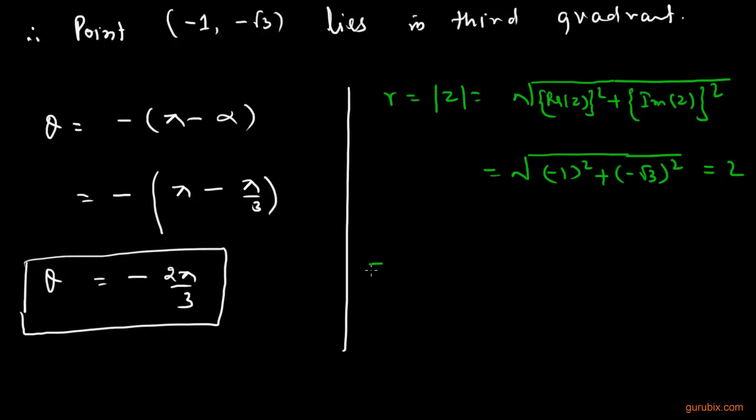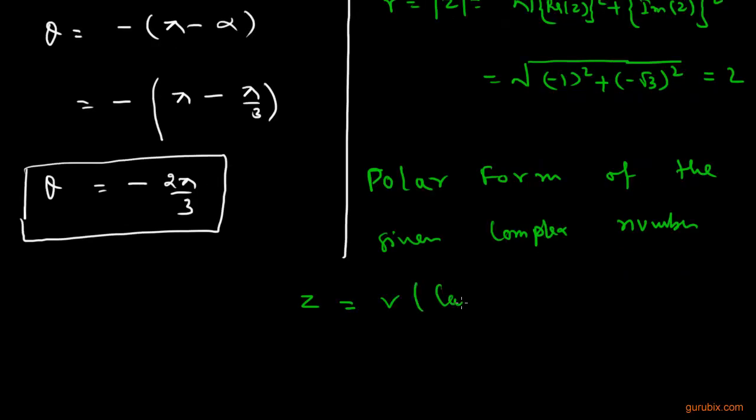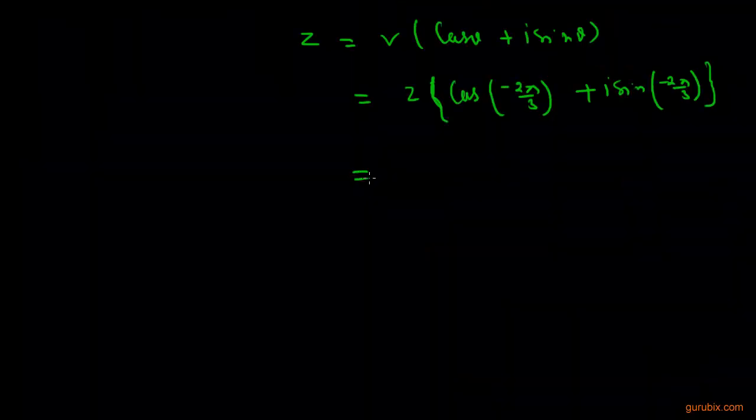Therefore, the polar form of the given complex number equals r cos theta plus iota sin theta. Here we have r is 2, cos theta where theta is negative 2 pi by 3 plus iota sin negative 2 pi by 3.